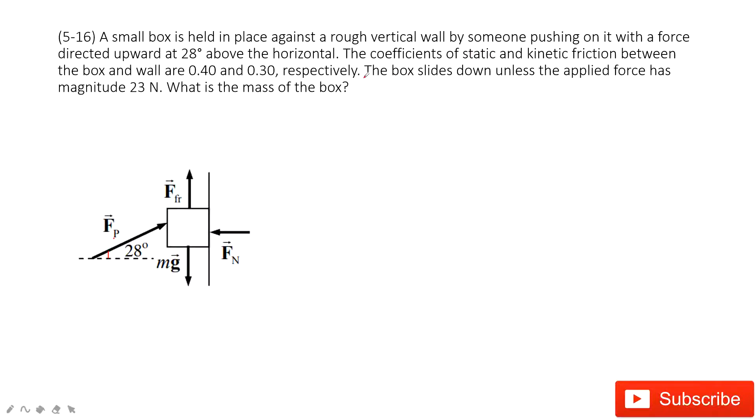So in this one, we want to look at this. The box slides down unless the applied force. So that means in this case, we just need to find the boundary. The box just kept stationary. And if over this one, the box will slide down. So in this case, the box is still stationary. We still choose the static coefficient of friction 0.4.